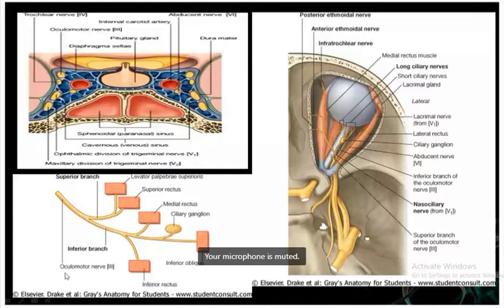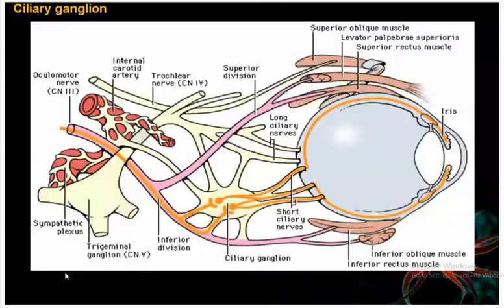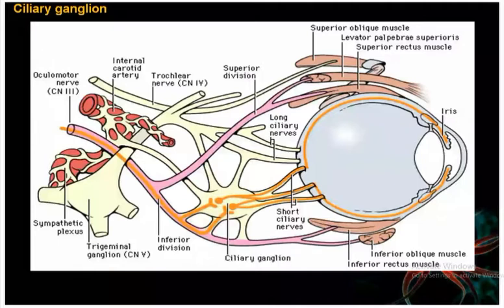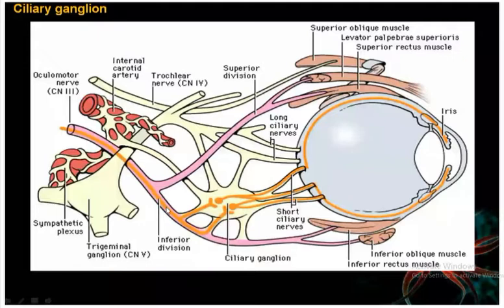Next, the ciliary ganglion: the preganglionic parasympathetic outflow comes from the Edinger-Westphal nucleus. It follows the course of the oculomotor nerve, passing through the inferior ramus to enter the ciliary ganglion, where it synapses. The postganglionic fibers travel through the short ciliary nerves and finally supply the ciliary muscle and sphincter pupillae.